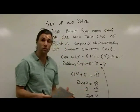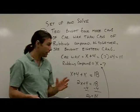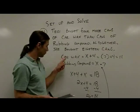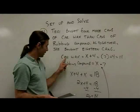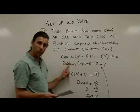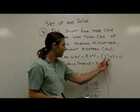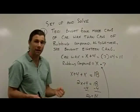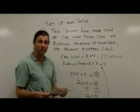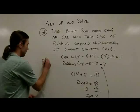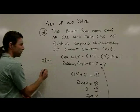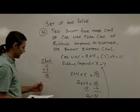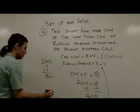The last thing is to check that these answers make sense. First, 11 must be 4 more than 7 — and it is. Second, altogether there must be 18 cans: 11 plus 7 equals 18. The problem checks, and both answers are correct.